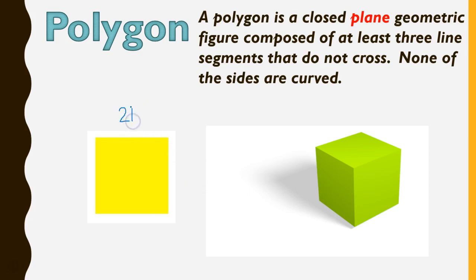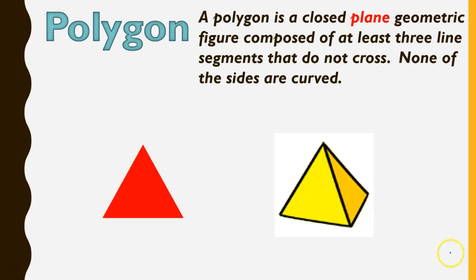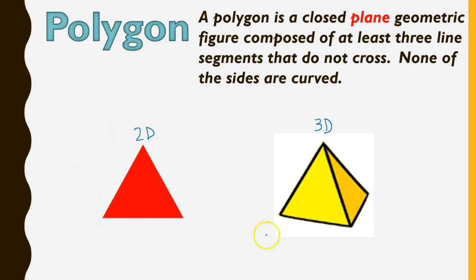So that is one thing that makes it a polygon — if it is a two-dimensional shape. Here would be a triangle that you could draw on a piece of paper. This is a plain shape, or a two-dimensional shape. This is like a pyramid, and this is a three-dimensional shape because it's not flat. So in order to be a polygon, it needs to be flat, like this triangle here.